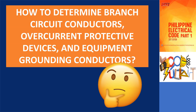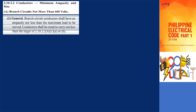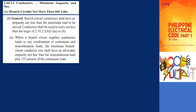How to determine branch circuit conductors, overcurrent protective devices, and equipment grounding conductors. Section 2.20.2.2.1 — for conductors not more than 600 volts, general. Branch circuit conductors shall have an ampacity not less than the maximum load to be served. Where a branch circuit supplies continuous loads or any combination of continuous and non-continuous loads, the minimum branch circuit conductor size shall have an allowable ampacity not less than the non-continuous load plus 125% of the continuous load.